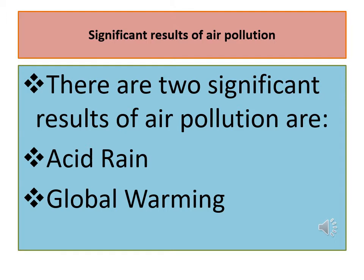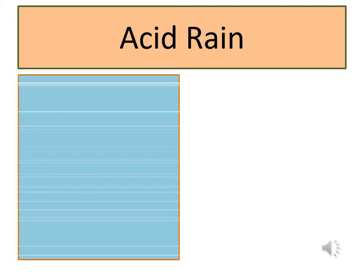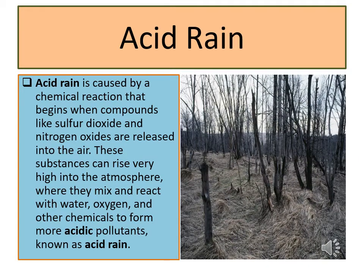There are two significant results of air pollution: acid rain and global warming. Acid rain is caused by a chemical reaction that begins when compounds like sulfur dioxide and nitrogen oxides are released into the air. These substances rise very high into the atmosphere, where they mix and react with water, oxygen, and other chemicals to form more acidic pollutants known as acid rain.